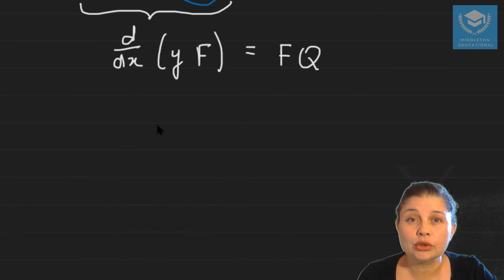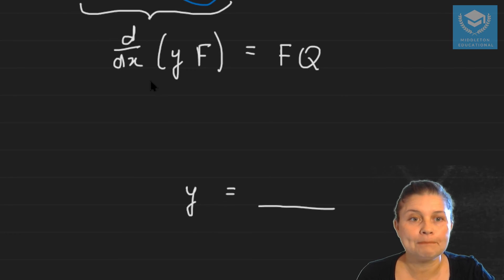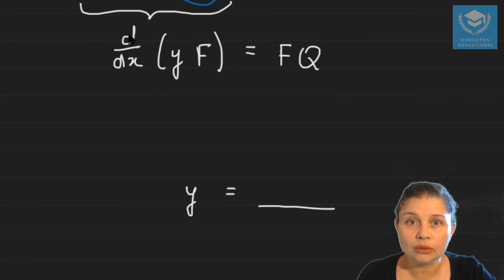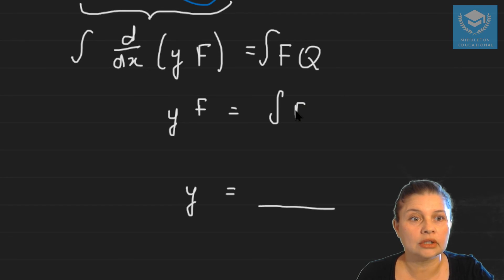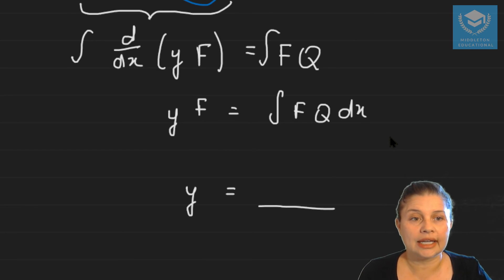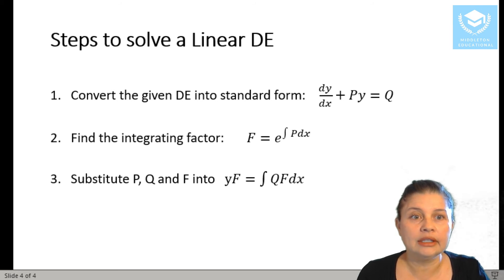Because we want to solve the differential equation, we want to have y on its own. So how do we get rid of this derivative? We can take the integral of both sides, because the integral and the derivative are inverses of one another. That means we'll have yf equals the integral of fq dx. This is the equation shown in step three of how to solve the differential equation — all you now do is substitute in the values of q and f.